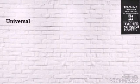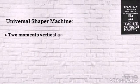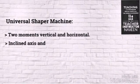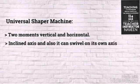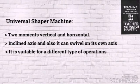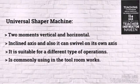In Universal Shaper Machines, there are two movements — vertical and horizontal. The table can also move in an inclined axis and can swivel on its own axis. The Universal Shaper is suitable for different types of operations and is commonly used in tool room work.